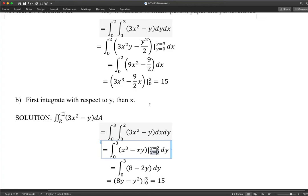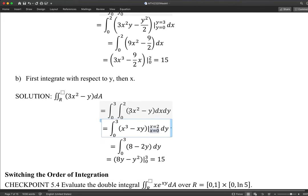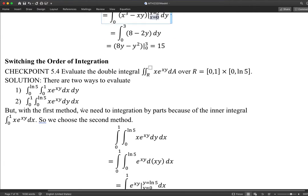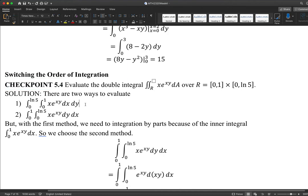I'm going to continue with the calculation of double integrals. This time it is from checkpoint 5.4, still from the textbook. We want to evaluate this double integral in two ways. x times e to the xy. The region is a rectangular region. Don't be intimidated by this log n of 5. Log n of 5 is a constant, it is a number. It is a rectangular region.